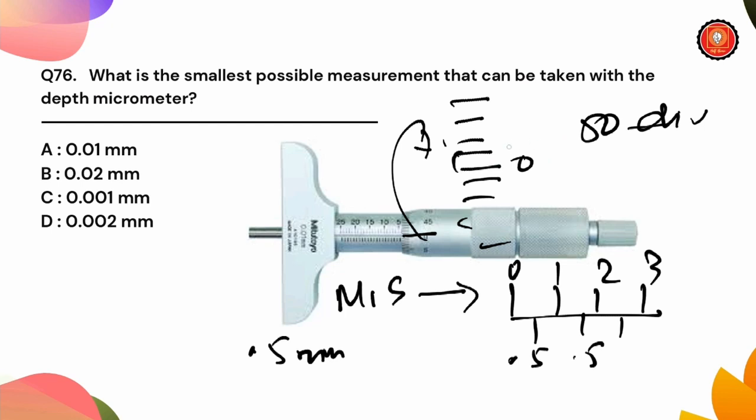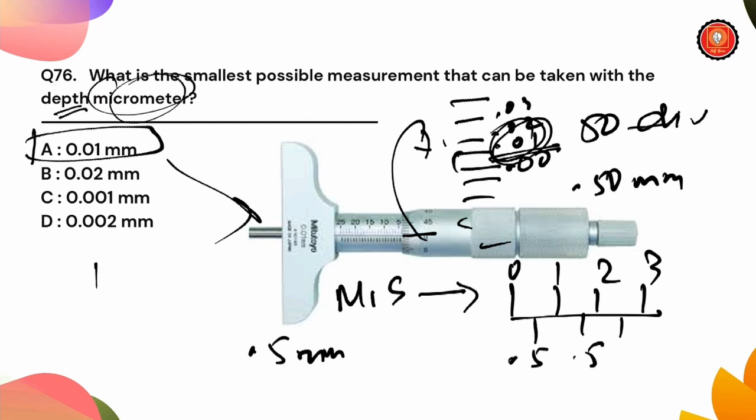We need to get 0.00, 0.01, 0.02, 0.03, and we need to get 0.50 mm. So we need to get 0.01 mm as our depth micrometer. This is the smallest measurement.